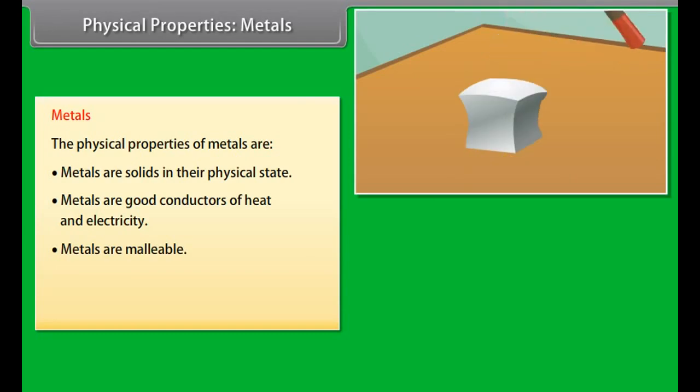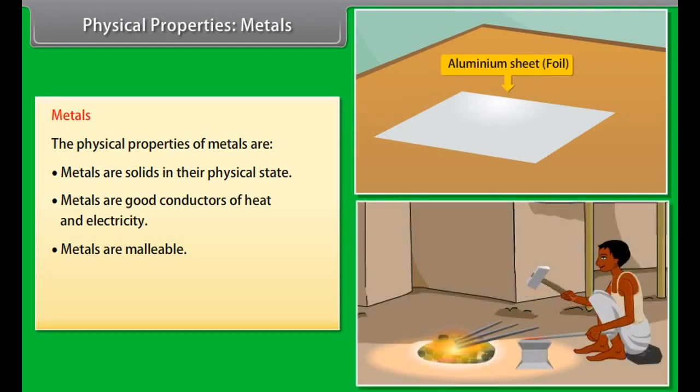Malleable. Metals can withstand hammering and be made into thin sheets known as foils. For example, iron is heated and then hammered into different forms, foils, shapes, etc.